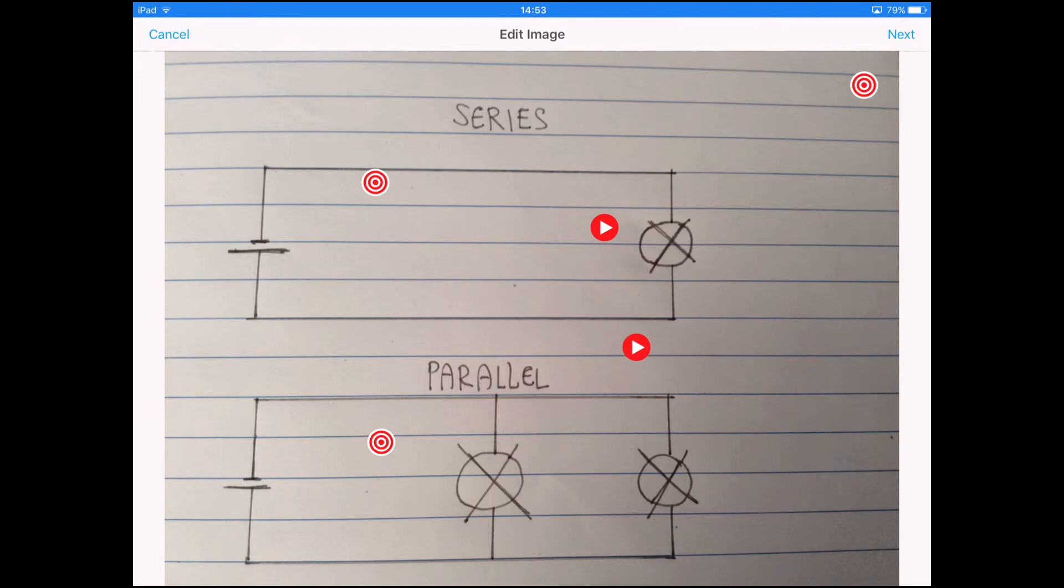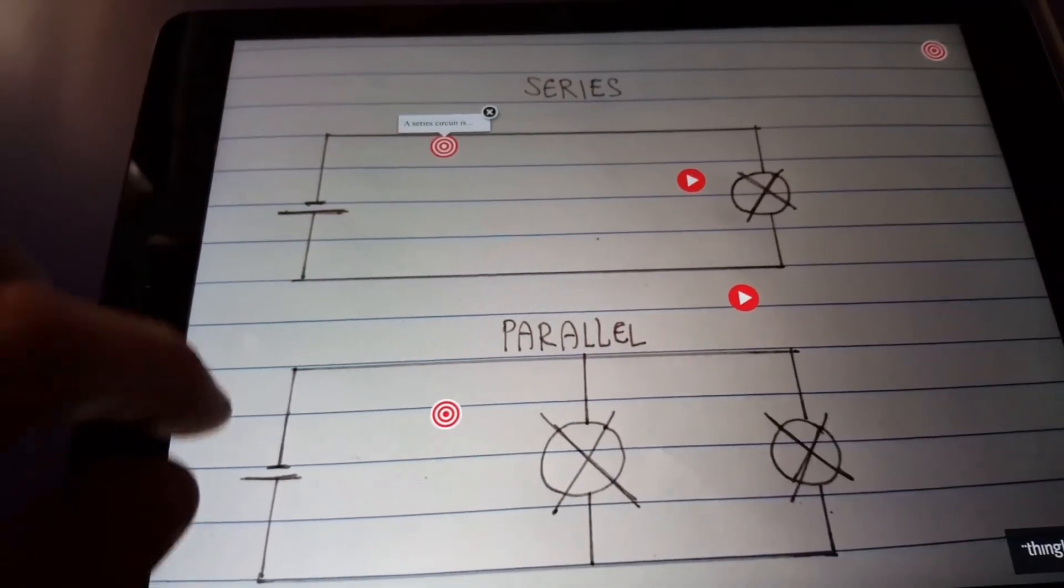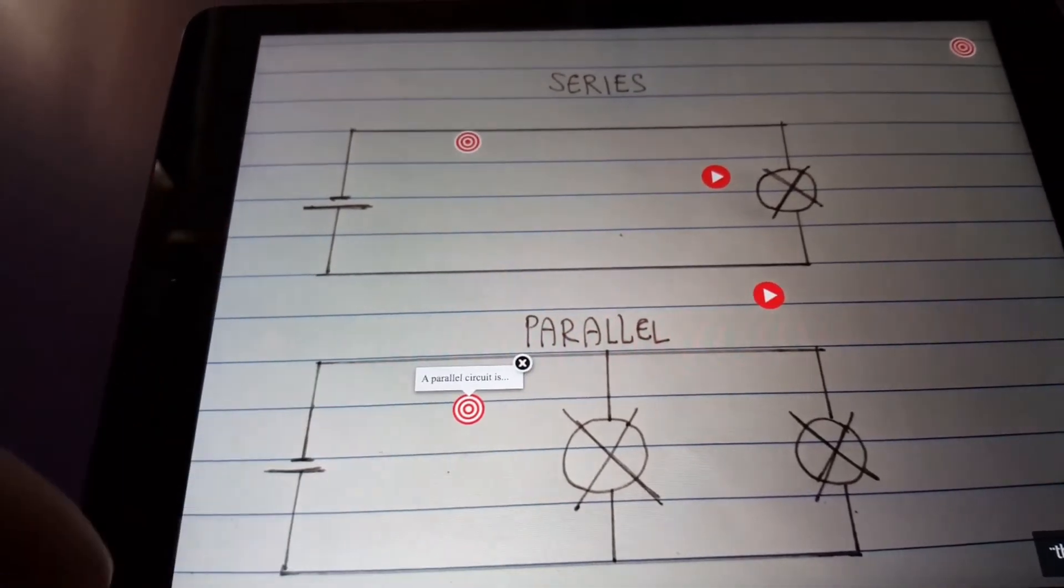That's enough for the explanation for now. To finish off, just hit next in the top right. And then you can preview or save your ThingLink. I'm going to hit save.